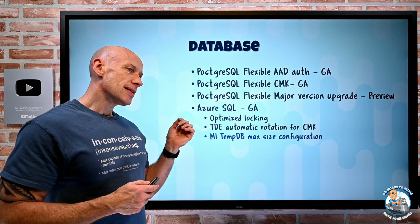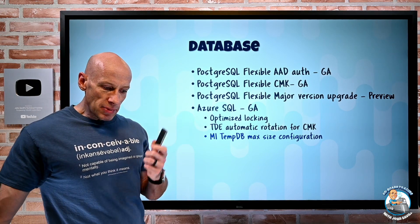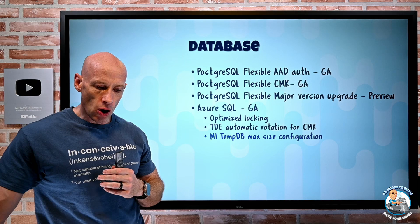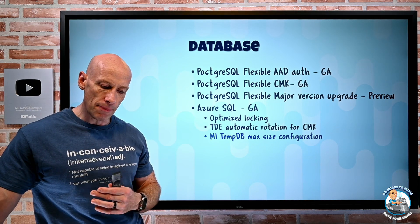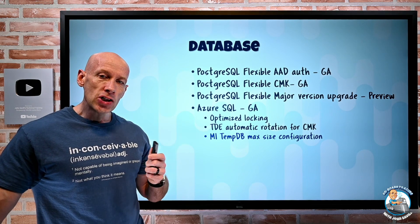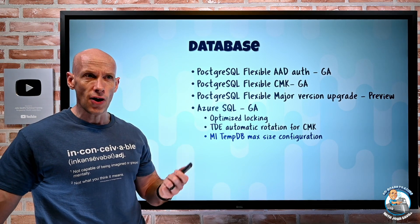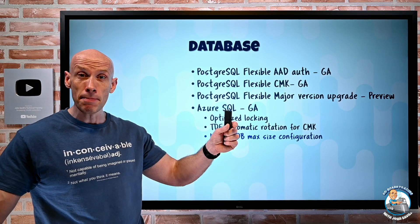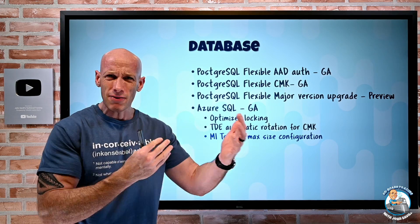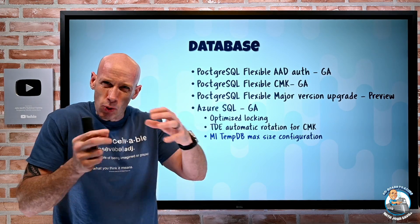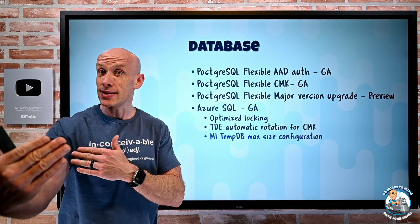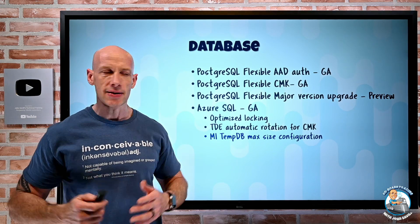Managed Instance now has a tempdb max size configuration. Previously, the maximum tempdb size was determined by the SKU — for example, around 120 GB for general purpose. Now you can set a maximum size per tempdb file. The recommendation is to set all files to the same maximum size due to the round-robin allocation algorithm. You can't exceed the service's maximum, but you can now configure a smaller size if desired.